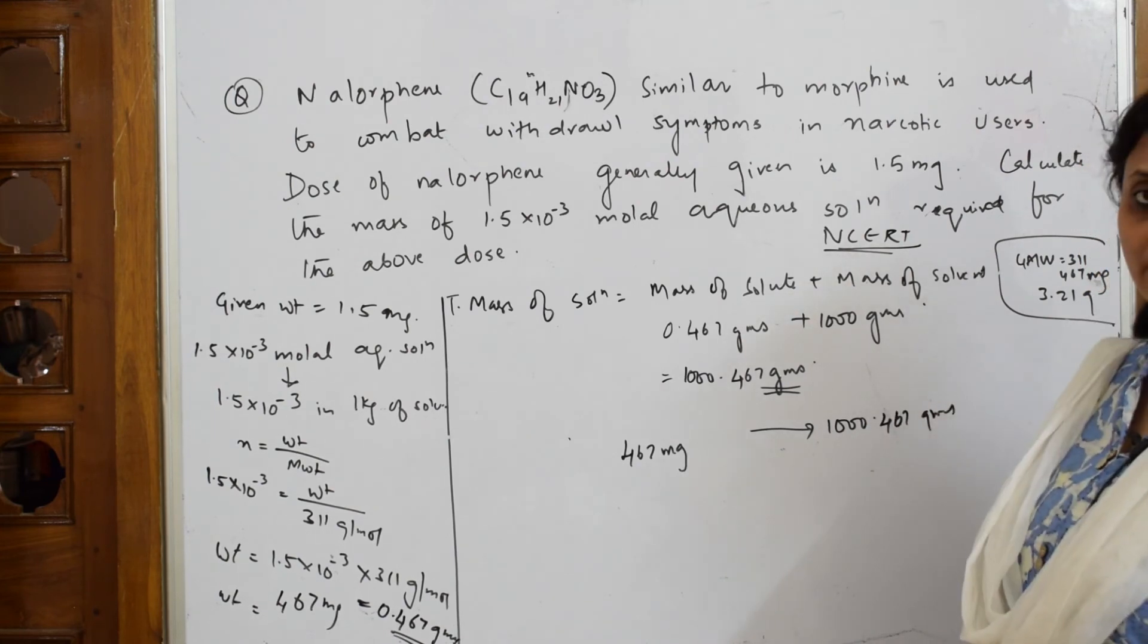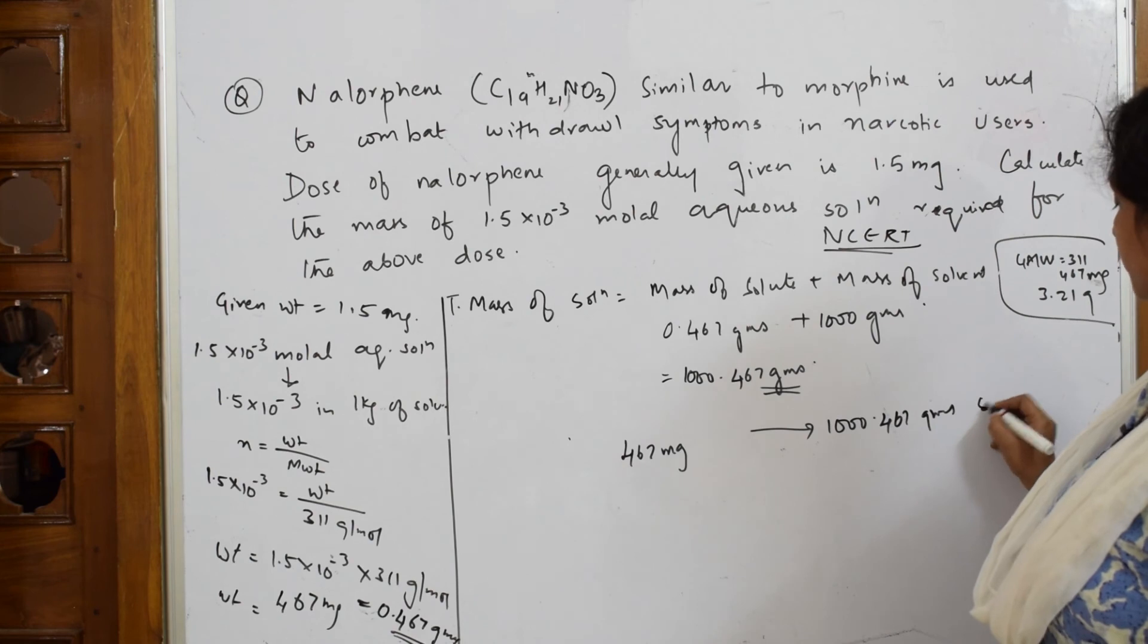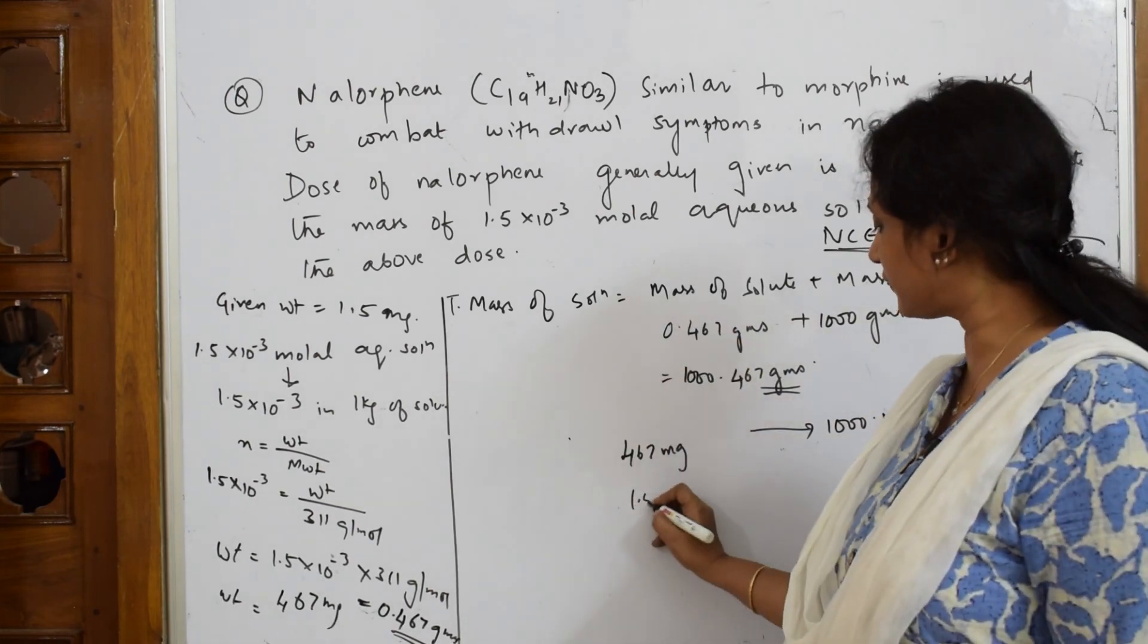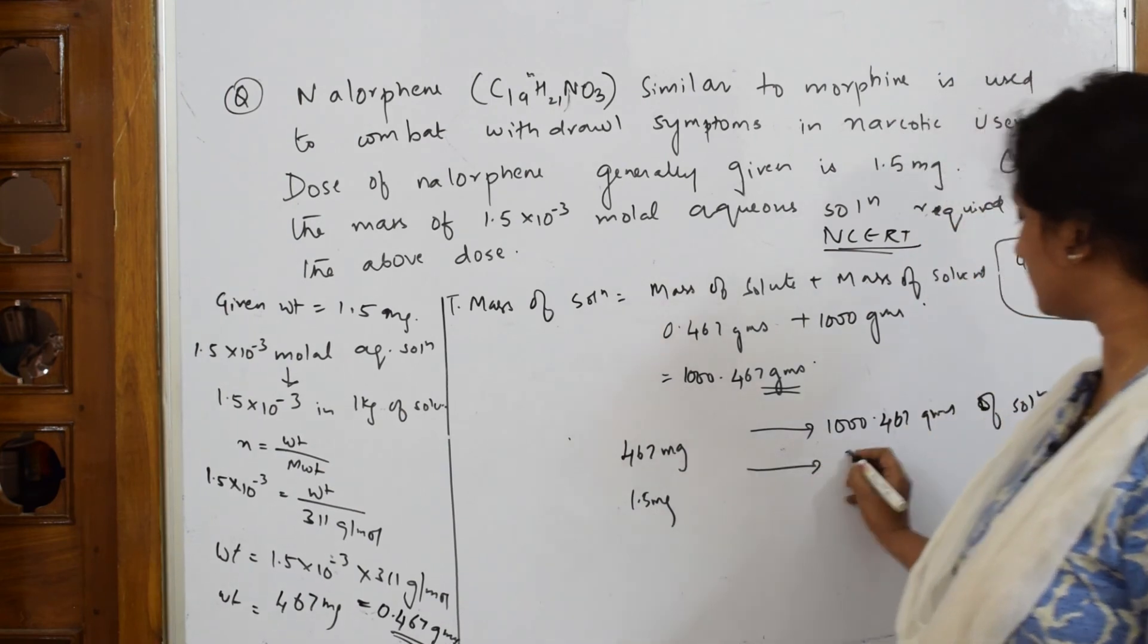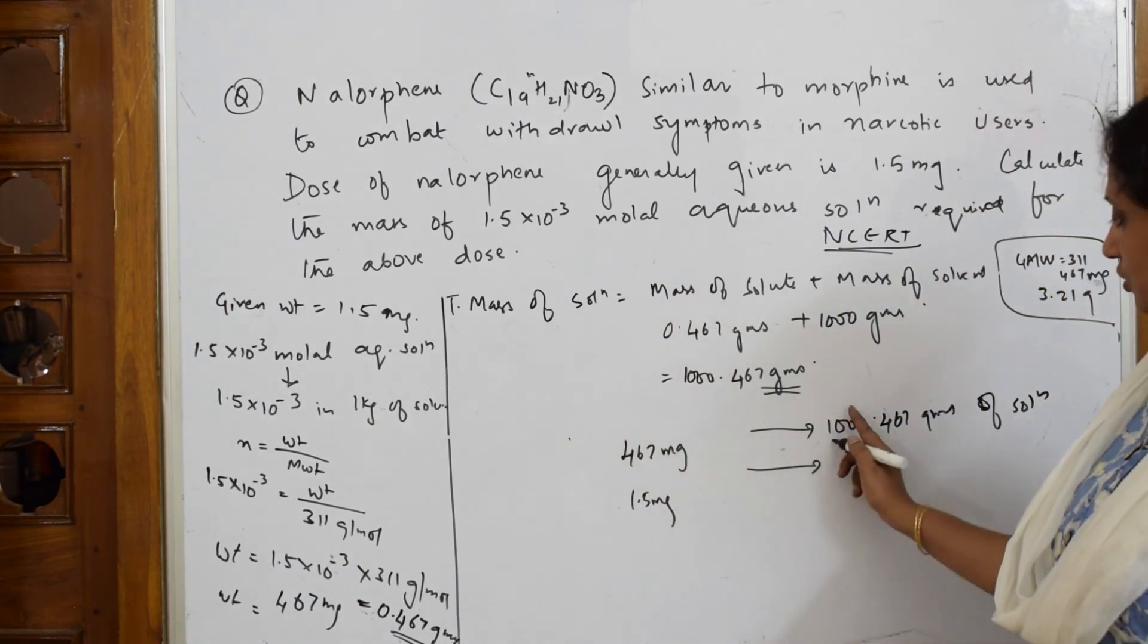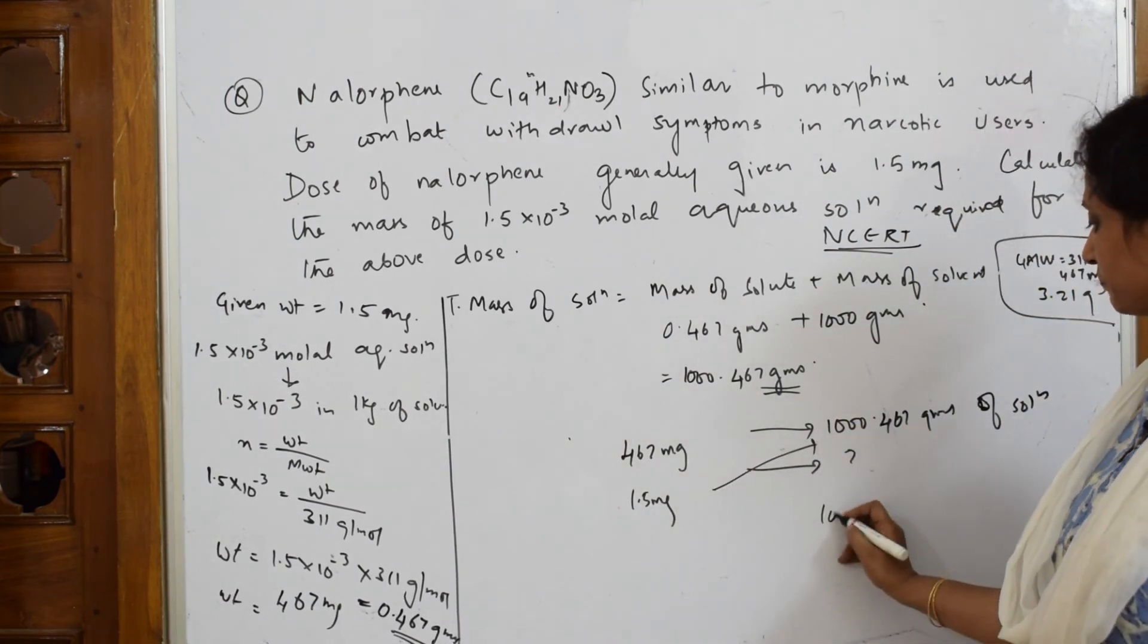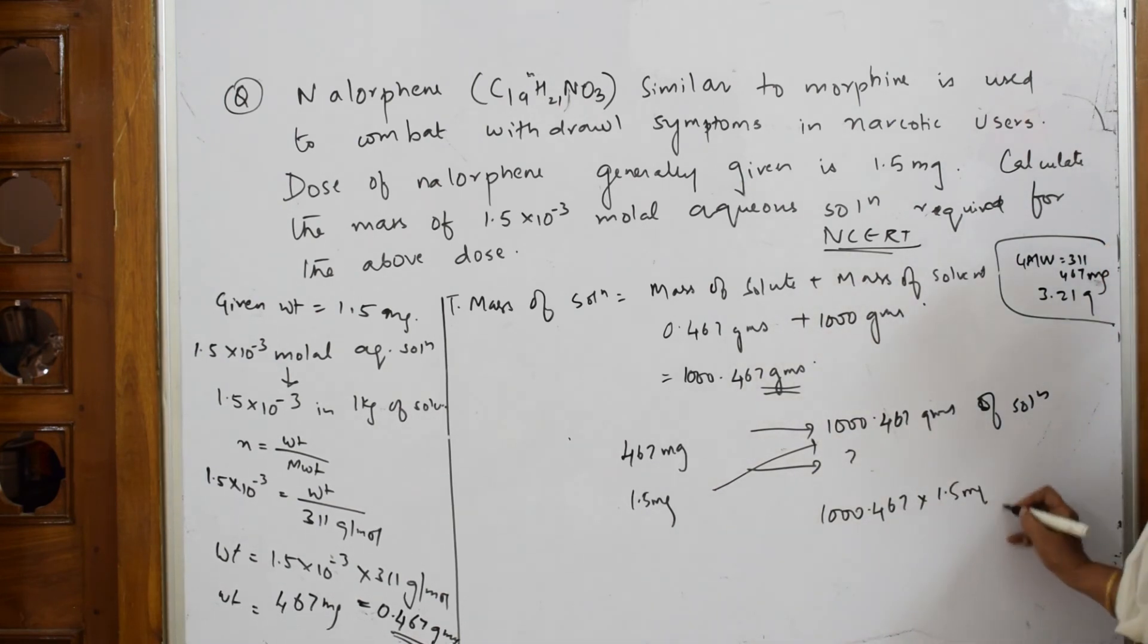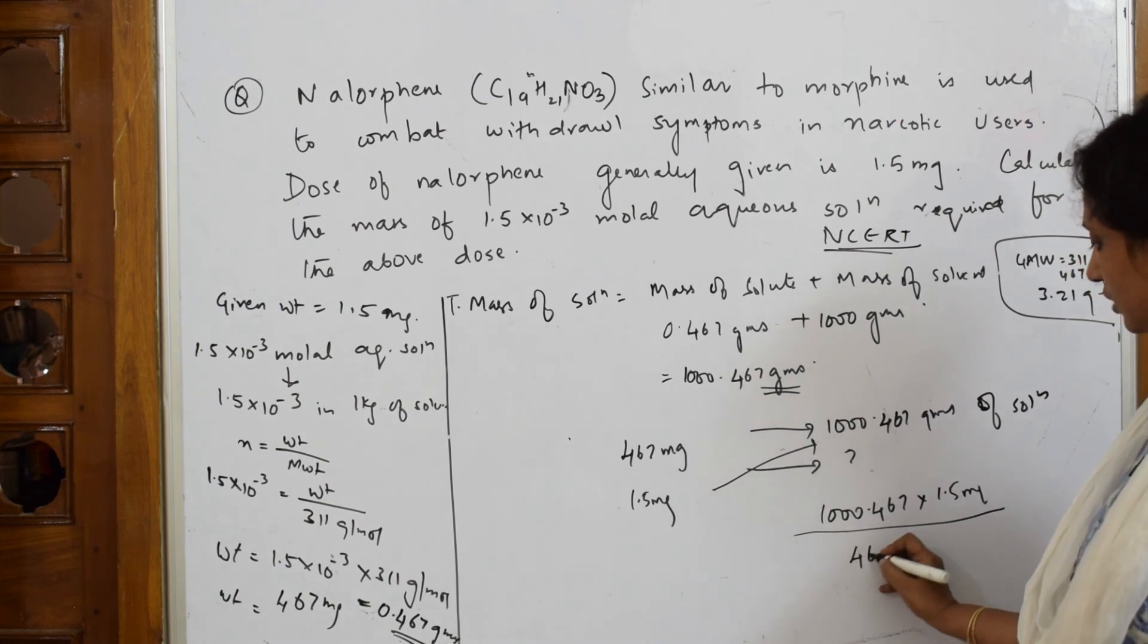Now I'm going to find out for 1.5 milligrams how much will be the solution. Cross multiply - 1000.467 × 1.5 milligrams divided by 467.